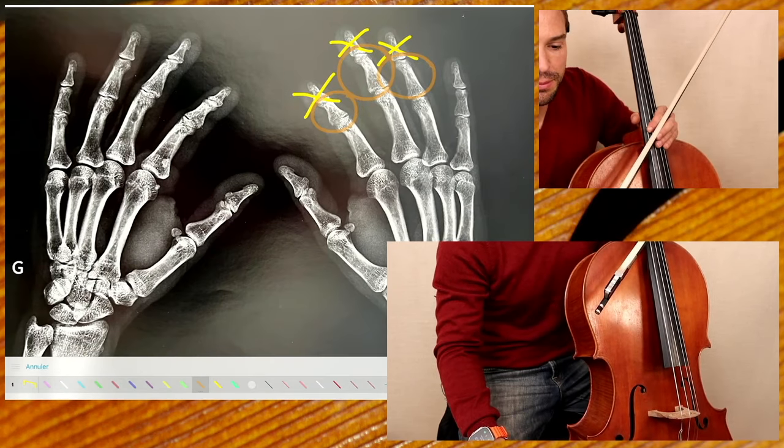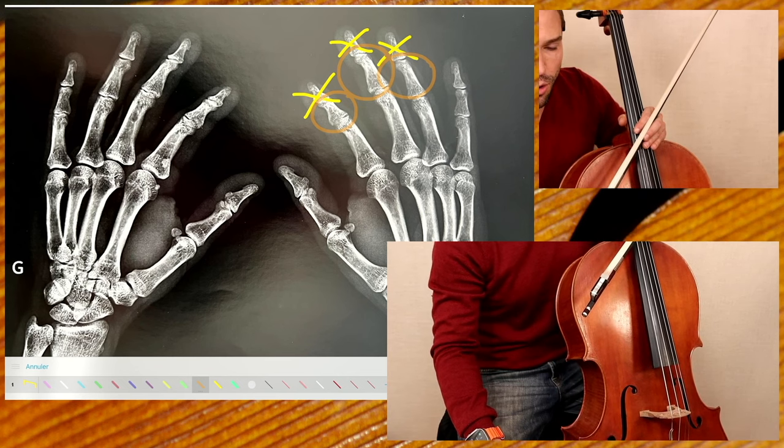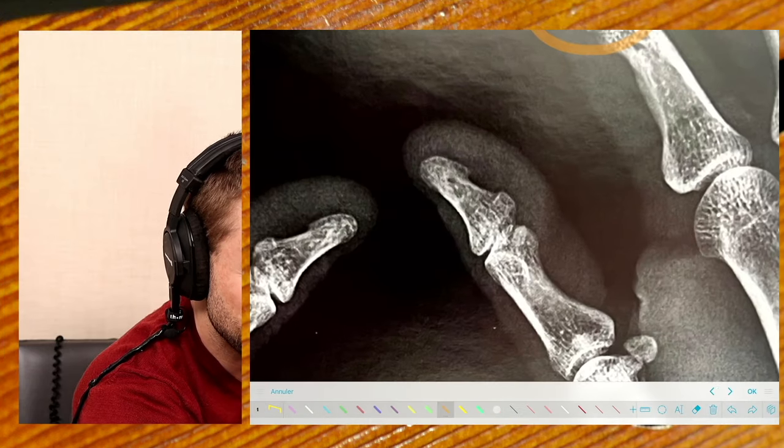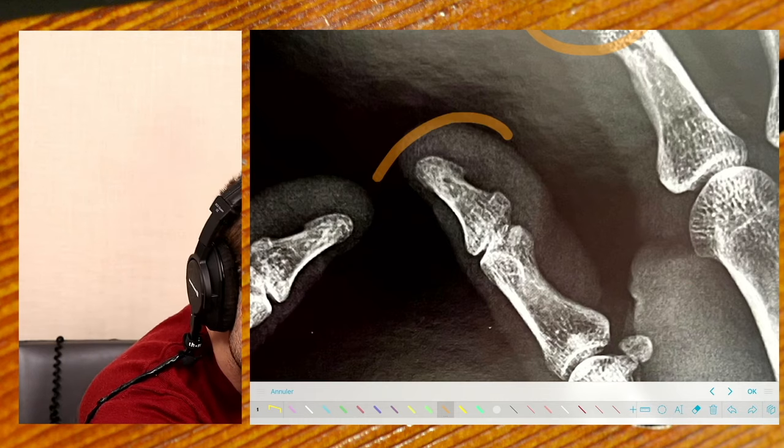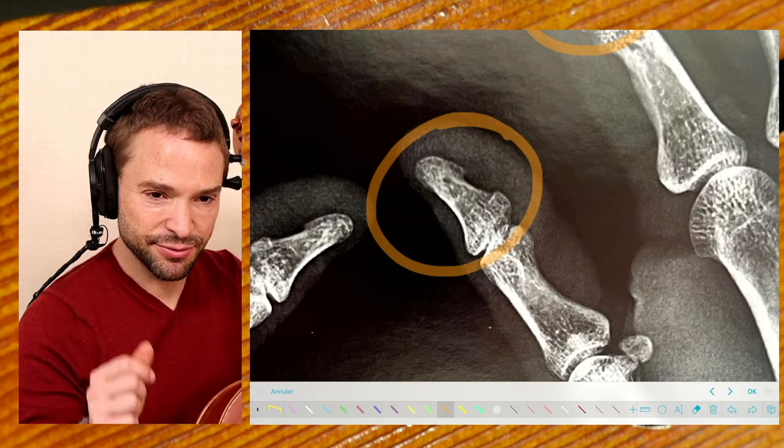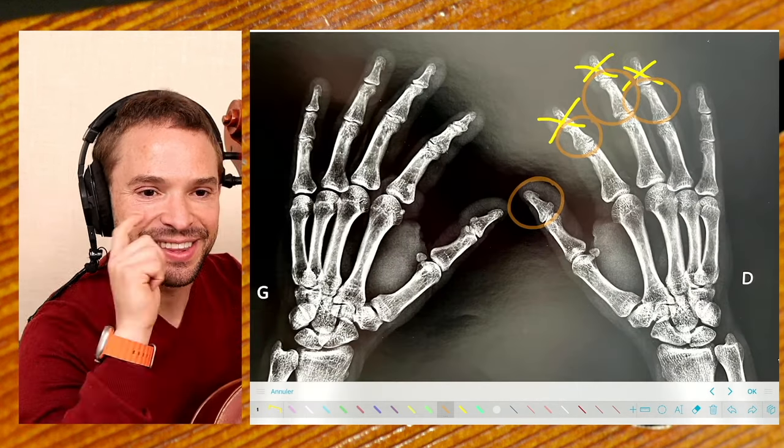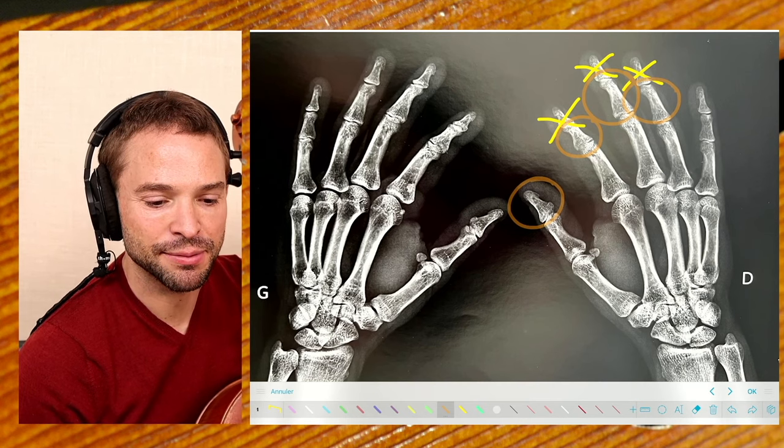So those three parts are the ones that are holding the bow. Yeah, but the thumb—the last phalanx, finger bone—the last finger bone is the one that's holding the bow.